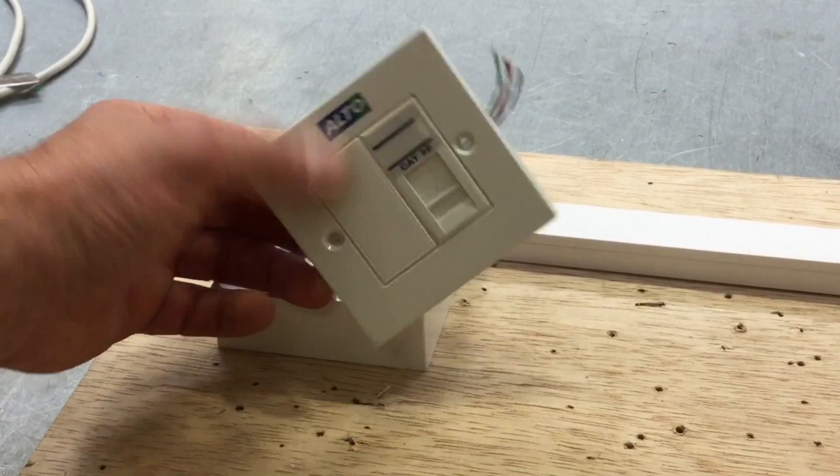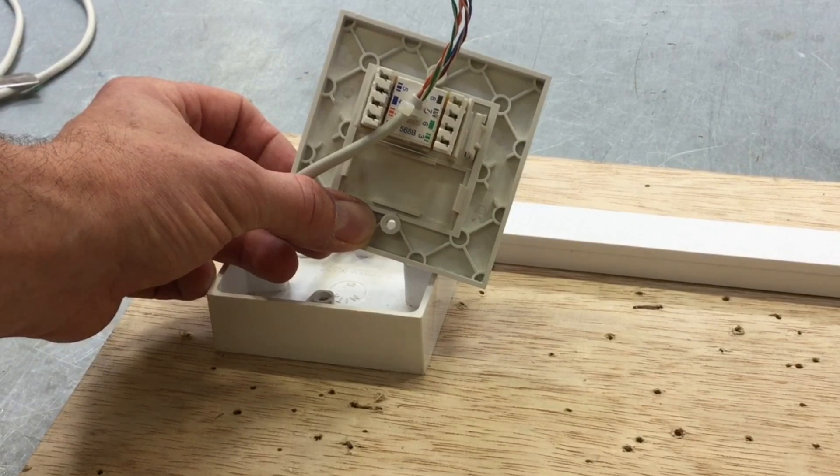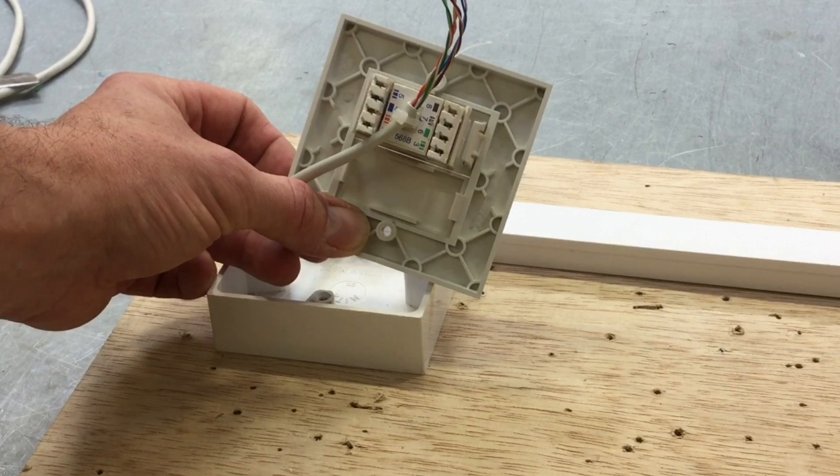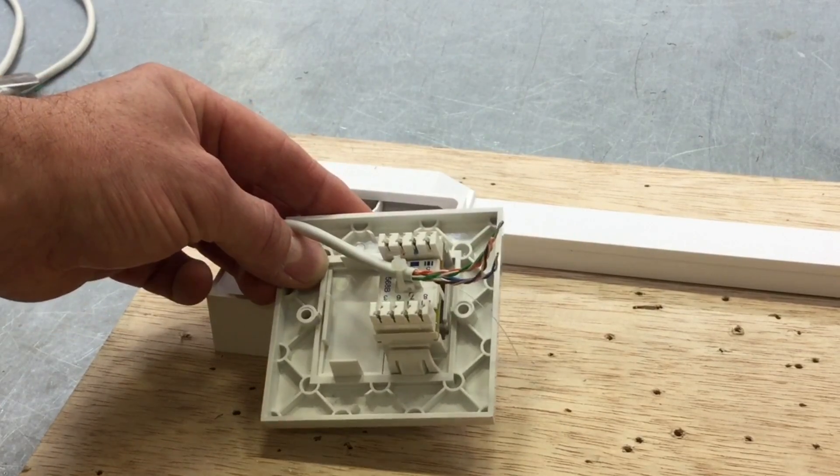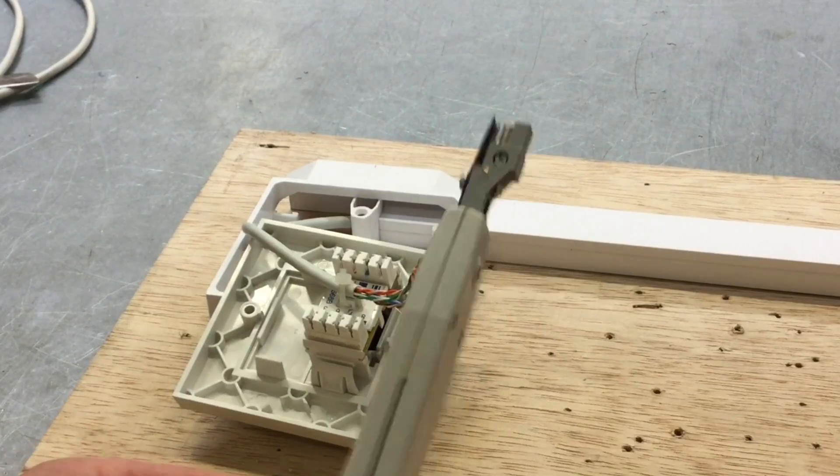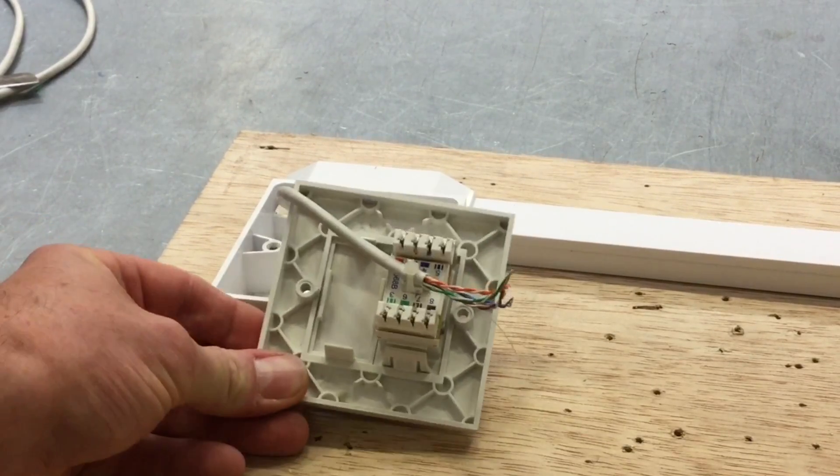On the faceplate end I've taken off, it's already color coordinated on the back, so we've got our orange, white and orange, blue, white and blue, etc. So we're already color coordinated there, so you haven't got to really remember the sequence this time. And I've stripped back my conductors, I just now need to detwist them and use now in this case a punch down tool in order to use the cable displacement that occurs.